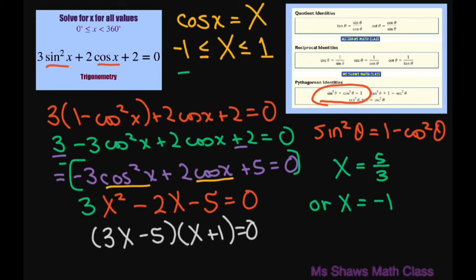But due to our restrictions from our range, our X can't be bigger than 1, so we have to disregard that. So we have X is negative 1.